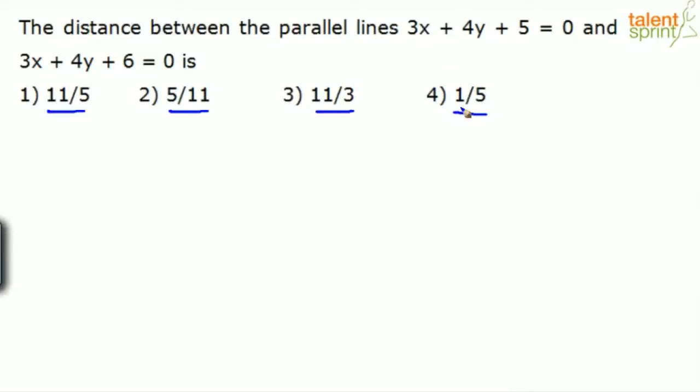If you revise the concepts we have covered in coordinate geometry, you would know that if there are two parallel lines, ax plus by plus c1 equals 0 and ax plus by plus c2 equals 0, the only difference between two parallel lines would be the constant value. The coefficients of x and y would be same or at least the ratio will be same.